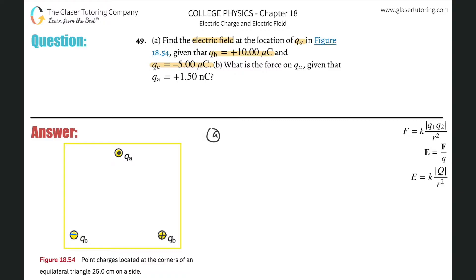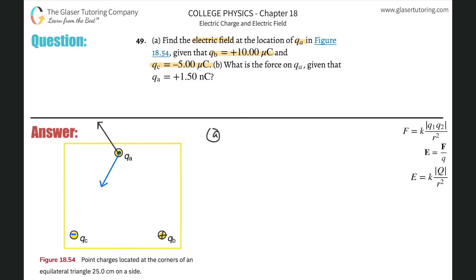The charge of q_a has nothing to do with the problem — the electric field at that point is zero contribution from it, as explained in number 47. For the positive charge q_b, electric field lines always point away, so at q_a's location I have a vector pointing away from q_b. For q_c, which is negative, field lines point toward it, so the vector at q_a points toward q_c.